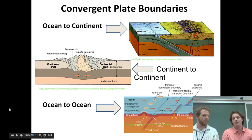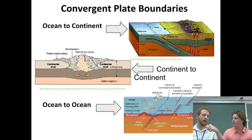Here we have three types of boundaries where they're running into each other. We can have an ocean plate running into a continental plate, a continental plate running into a continental plate, or an ocean plate running into an ocean plate.